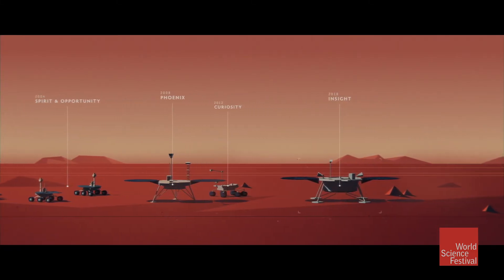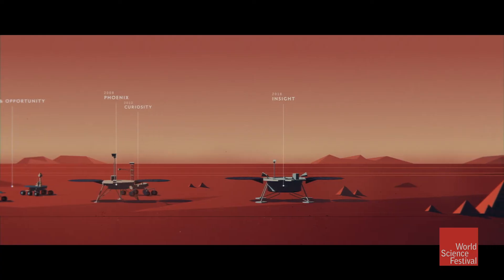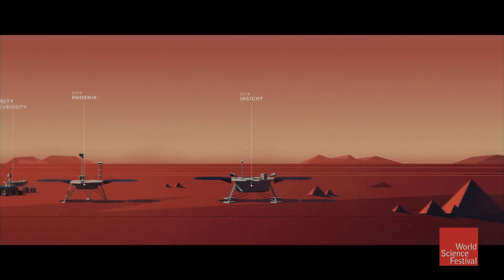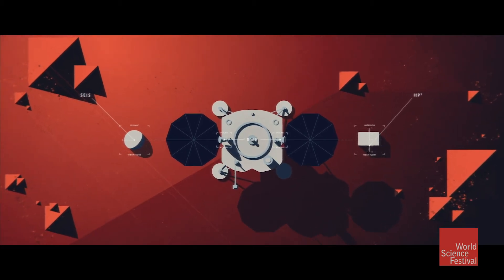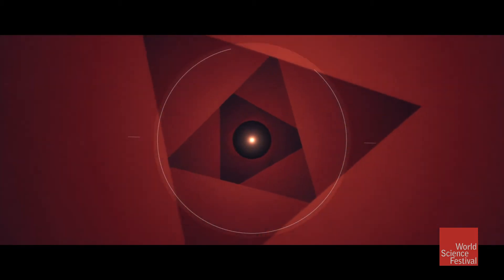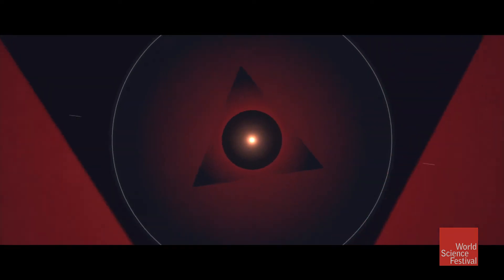NASA landed the InSight lander on Mars in November 2018, to finally explore the interior structure of the 4.5 billion-year-old planet, and give us a greater understanding of all planetary evolution, including that of our own.